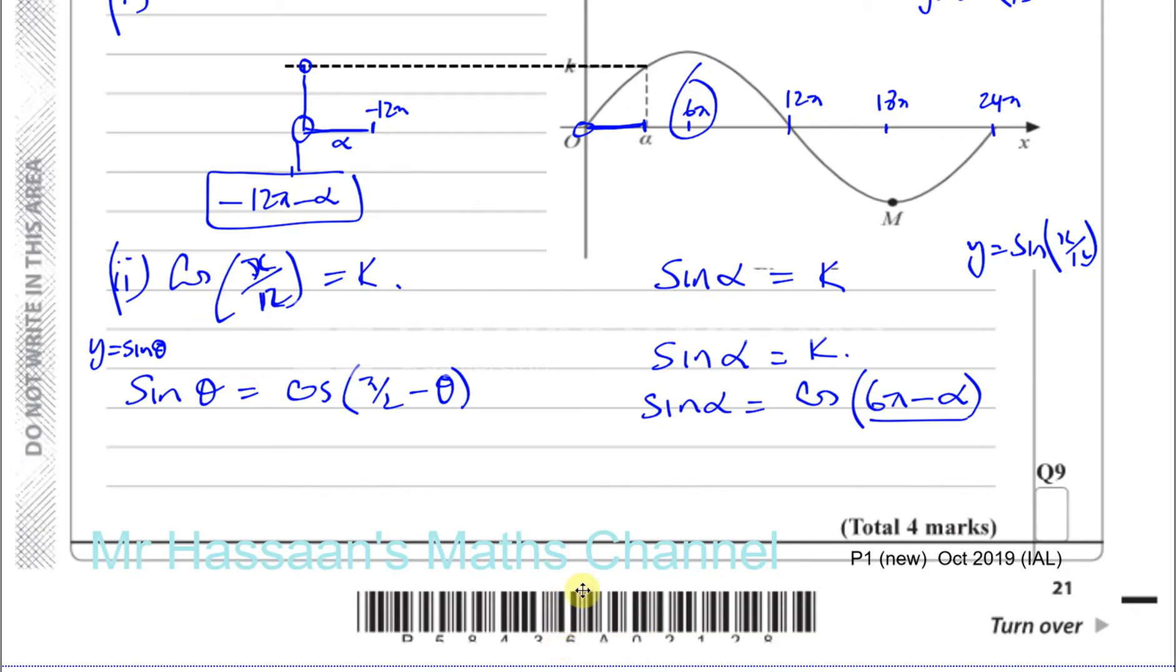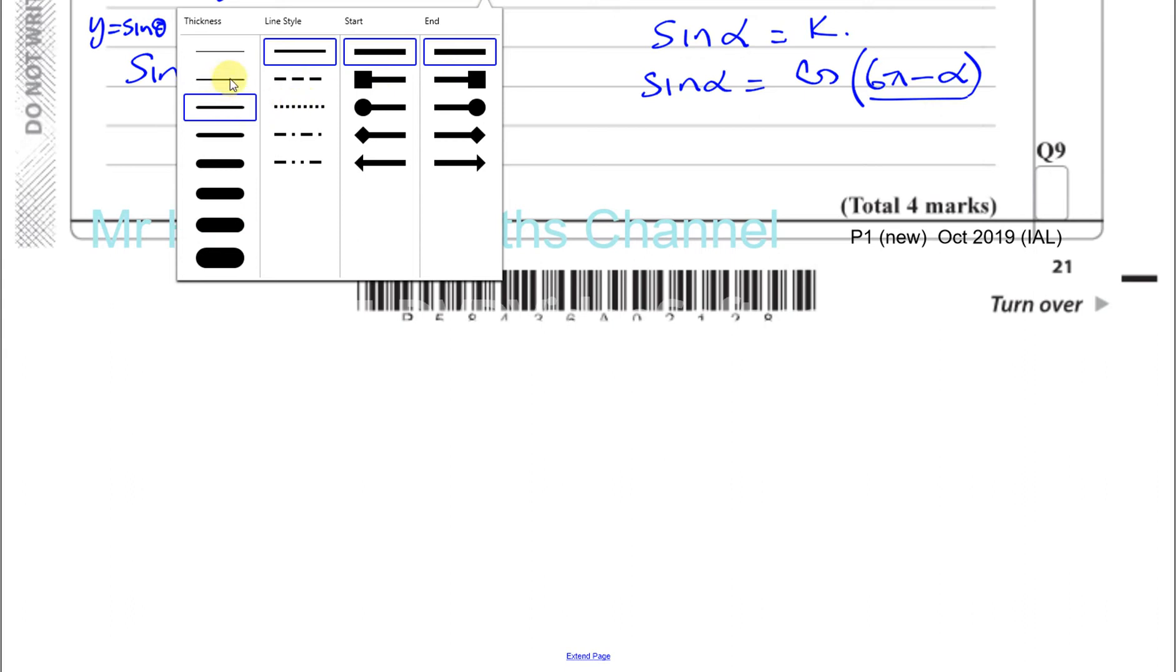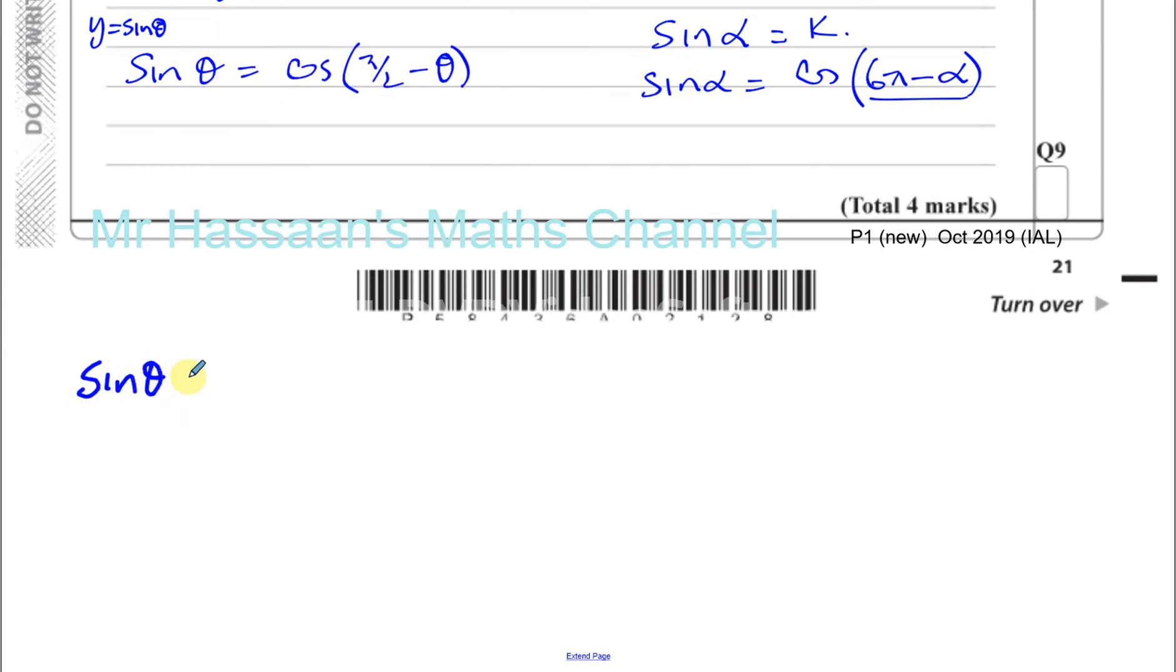I mentioned that we should know that the sine of an angle is the same as the cosine of 90 minus that angle and vice versa. So the cosine of an angle is the same as a sine of 90 minus that angle.